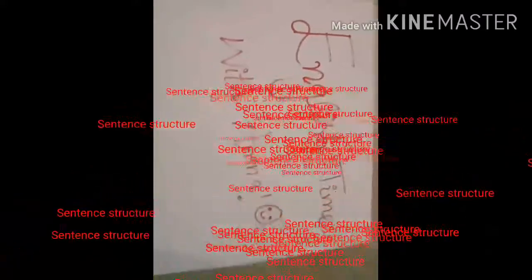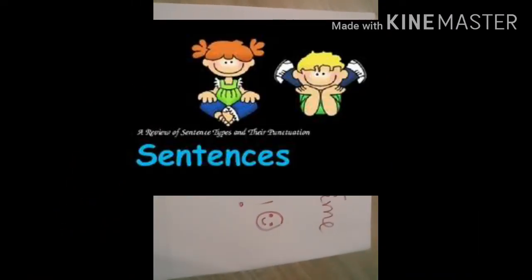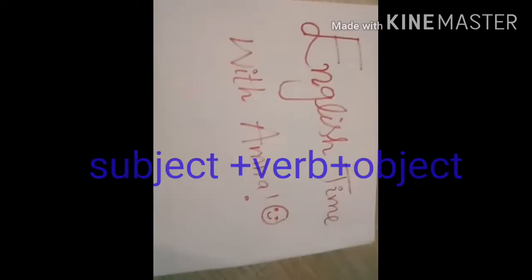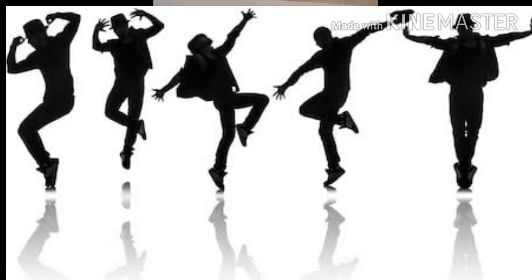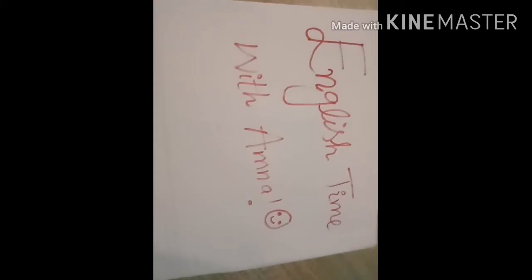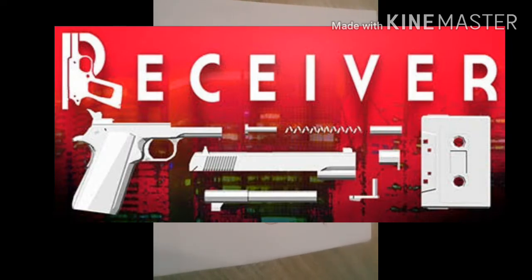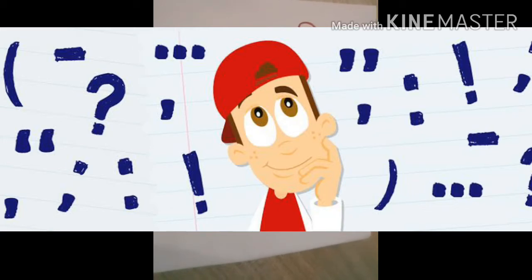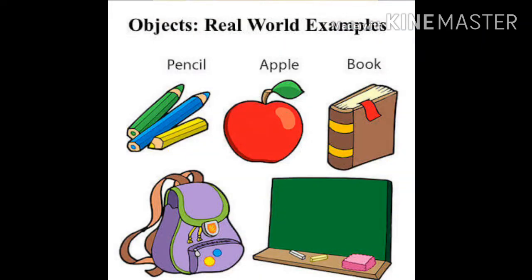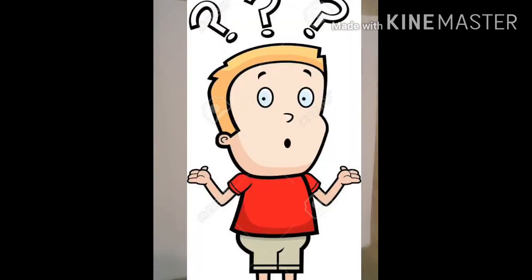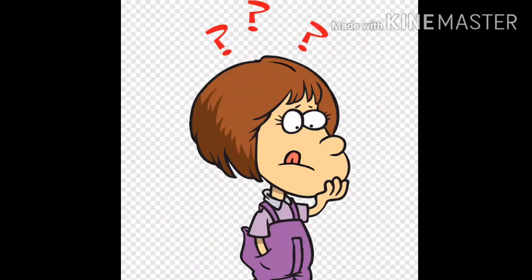A sentence is a group of words that convey a complete idea. In a sentence, we have a subject, a verb, and an object. The subject is always the performer of the action, the verb is the action itself, and the object is always the receiver of the action.